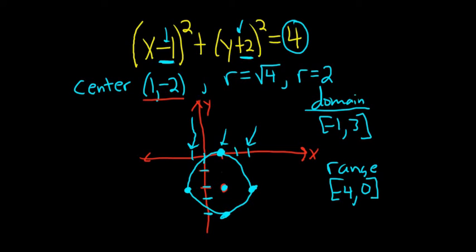Again, the domain is left to right, and it's x values. So negative 1 all the way to 3. The range is y values, and you go from the bottom up. Negative 4 all the way to 0.